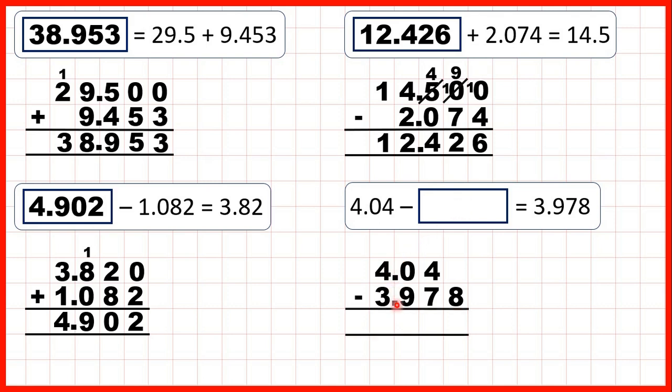Our decimal points are lined up, so we can write a zero in this empty square and copy the decimal point down into our answer, so that's lined up as well. We can't do 0 minus 8, so go to the left. 1 less, 1 in front. 10 minus 8 is 2.